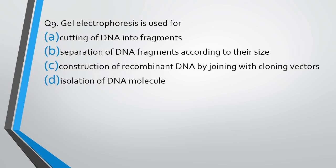Question number 9. Gel electrophoresis is used for cutting of DNA into fragments, separation of DNA fragments according to their size, construction of recombinant DNA by joining with cloning vector, or isolation of DNA molecules. What is gel electrophoresis used for? Gel electrophoresis is a common technique employed in biotechnology in which a gel slab is used and samples are loaded, electricity is passed, and the samples get separated according to their size. The correct answer is option B, separation of DNA fragments according to their size. And this does not apply only to DNA fragments. Even protein fragments or RNA fragments can be separated according to their size.